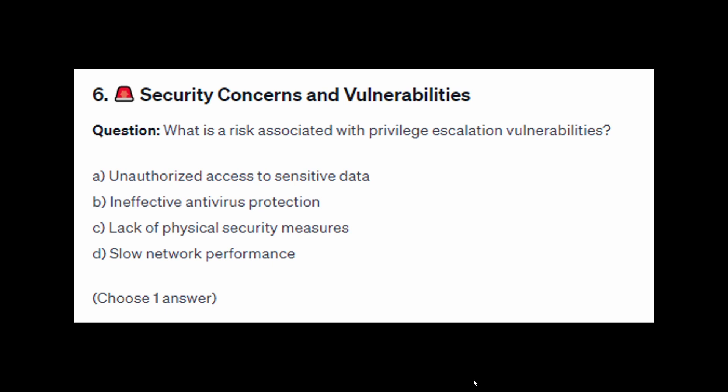For exam question number six: what is a risk associated with privilege escalation vulnerabilities? Is it A: unauthorized access to sensitive data, B: ineffective antivirus protection, C: lack of physical security measures, or D: slow network performance?